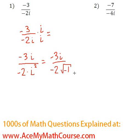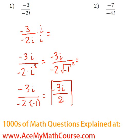So we're going to get negative 3i over negative 2 times negative 1. We're going to end up with negative 3i. Negative 2 times negative 1 is just 2. That'll be equivalent to negative 3i over 2.